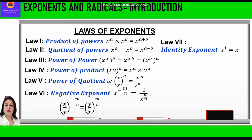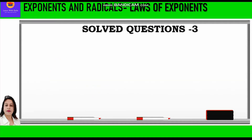The seventh law is identity exponent, which is x raised to power 1 is equal to x. That means whenever any number is raised to power 1, it is the number itself. The eighth law is zero exponent — x raised to power 0 is equal to 1, which says that any number raised to power 0 is 1. Now let's take up solved questions based on laws of exponents.